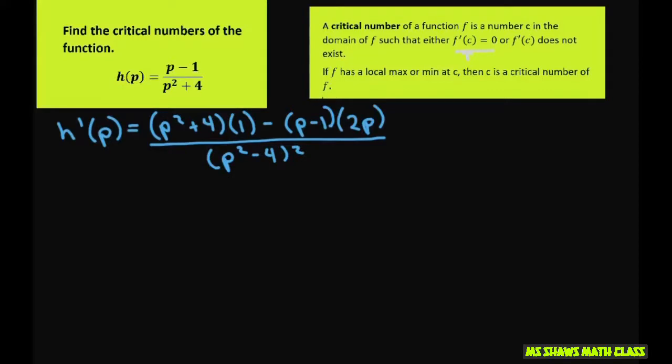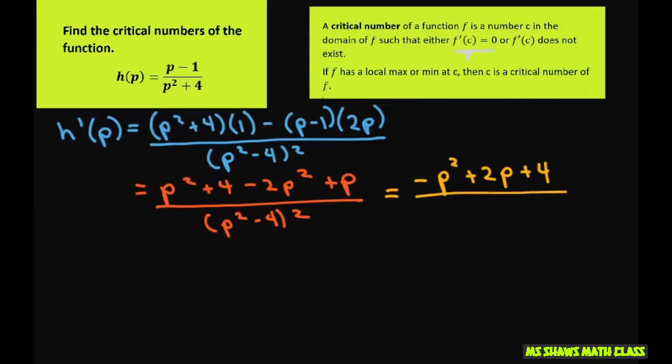Okay, simplifying your numerator, you're going to get p squared plus 4 minus 2p squared plus 2p. And then write down your denominator, and this simplifies even further to negative p squared plus 2p plus 4 divided by p squared minus 4 squared.